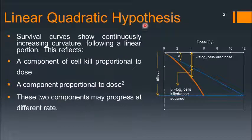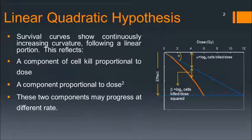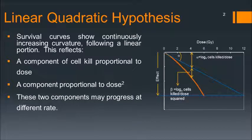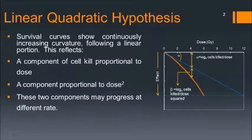Let us start with the linear quadratic hypothesis. The cell survival curves show a continuously increasing curvature to start with, followed by a linear portion. This has a component of cell kill proportional to dose, where alpha equals log e of cells killed divided by dose, and also a component proportional to dose squared, where beta equals log e of cells killed divided by dose squared. These two components — the linear and quadratic — may progress at different rates.